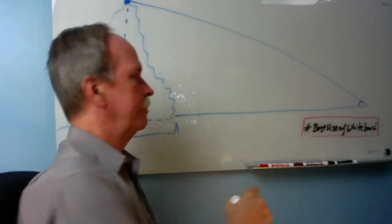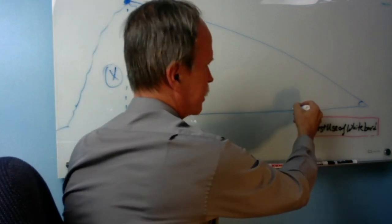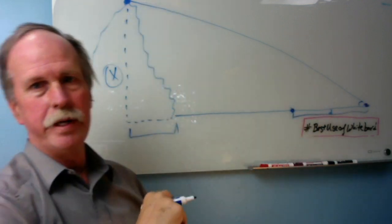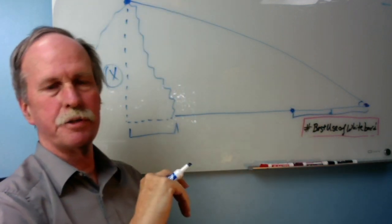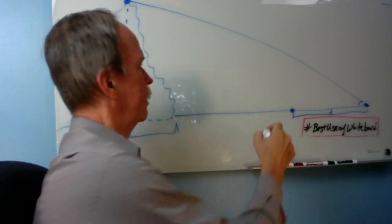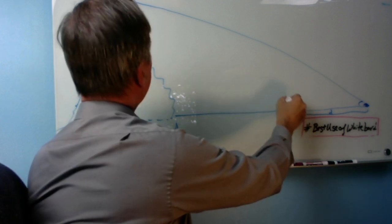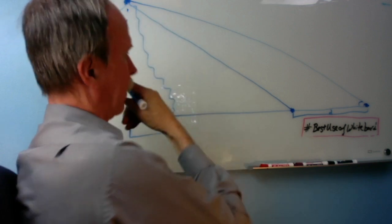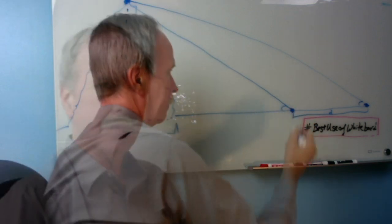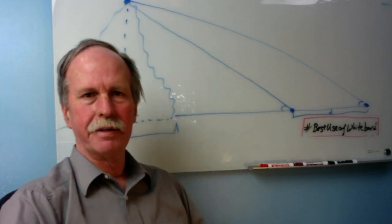Suppose instead we have a second spot right here. And we know the distance between those two spots exactly. We also know this angle right here. Now can we figure out the height of the mountain?